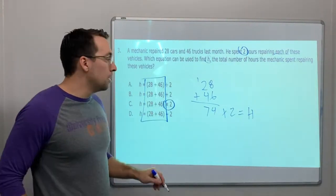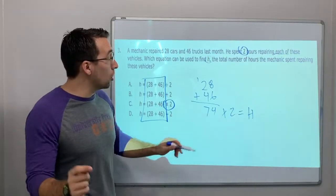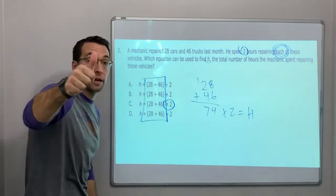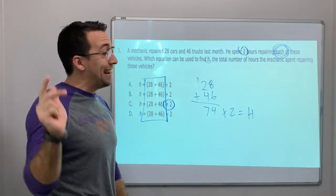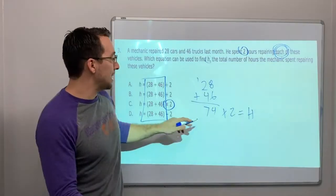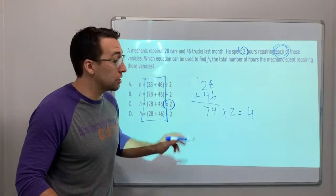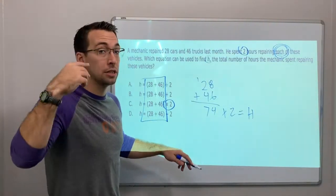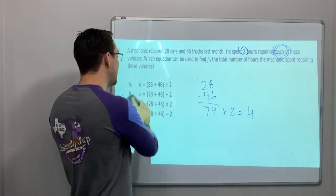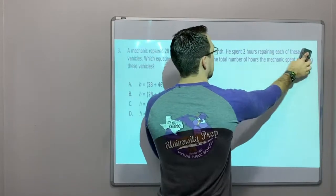Each is a great word for multiplication and for division. In this case, we're multiplying because it didn't take 74 hours. It took 74 times 2 because each car was 2 hours. So C is our answer.